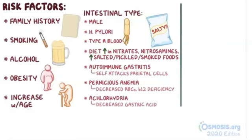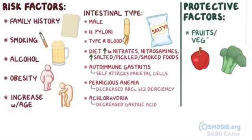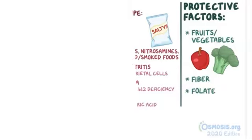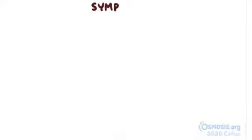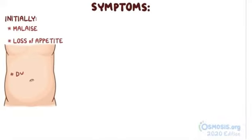On the other side, there are protective factors to prevent gastric cancer, and these include a high intake of fruits, vegetables, fiber, and folate. Initially, gastric cancer can be asymptomatic. If there are symptoms, they're usually vague, like malaise, loss of appetite, and dyspepsia, which is a burning sensation in the upper part of the abdomen.